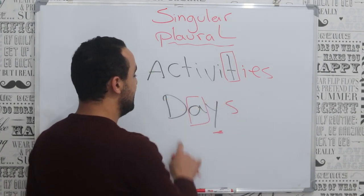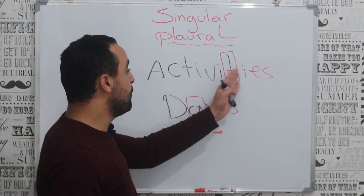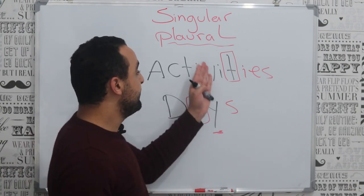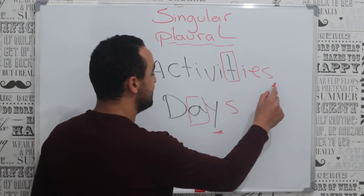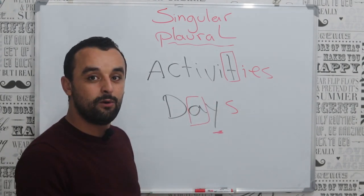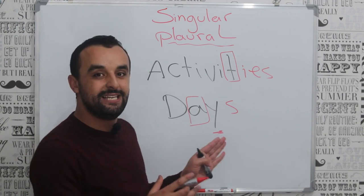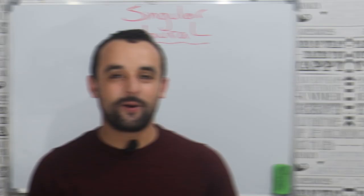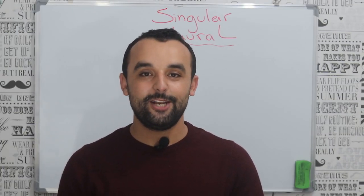So in the case of activity, we remove the Y and add IES, giving us activities. But in the case of day, we just add S, giving us days. Remember: if the letter before Y is a consonant, remove the Y and add IES. If the letter before Y is a vowel, just add S.